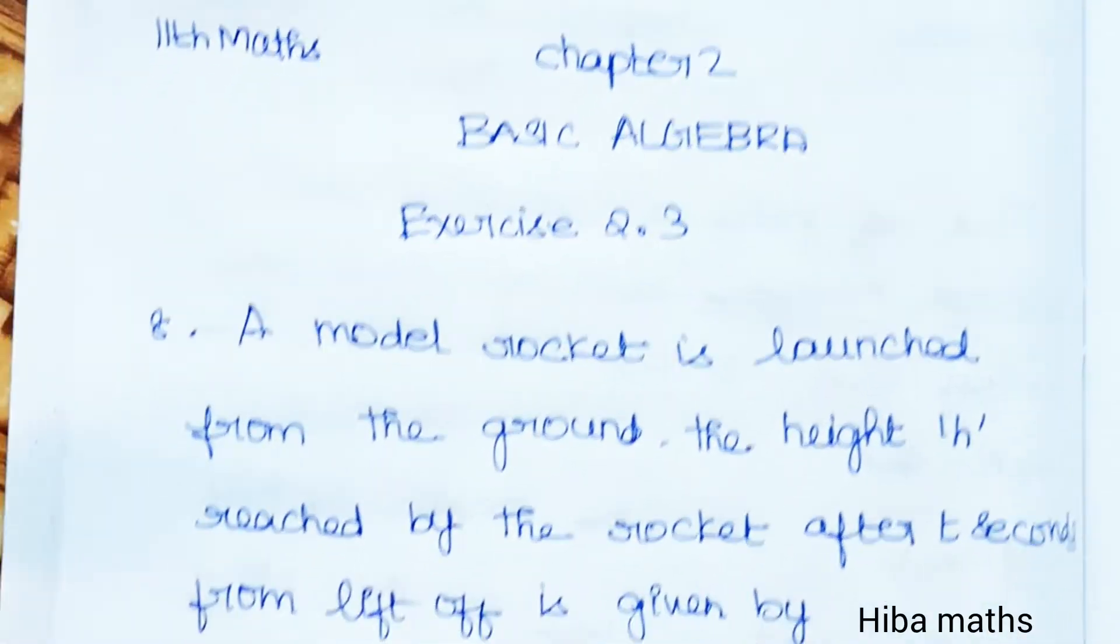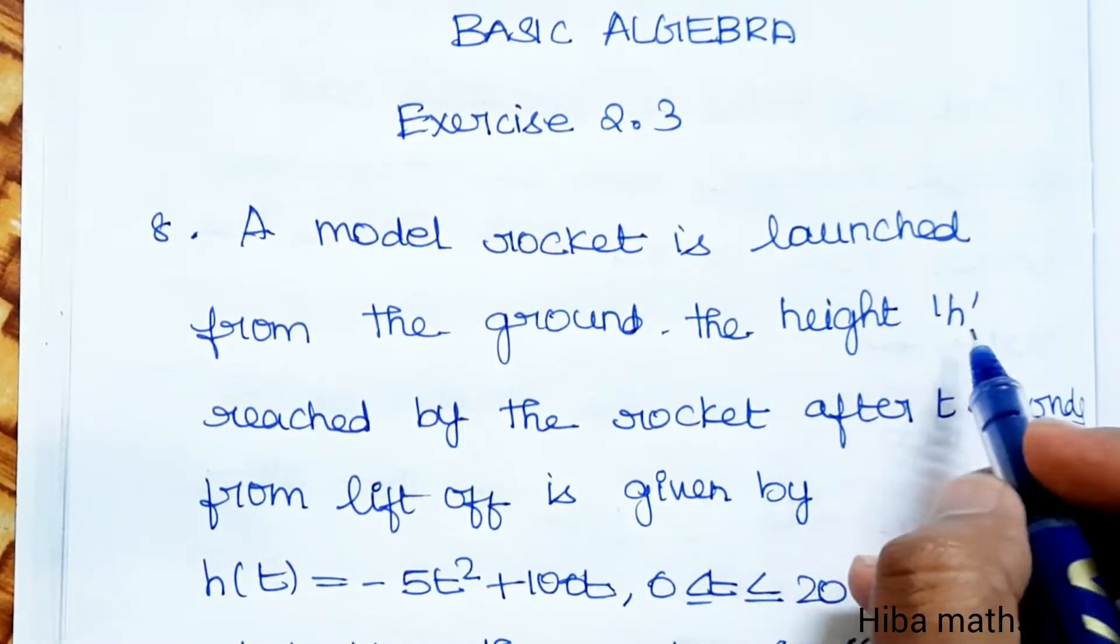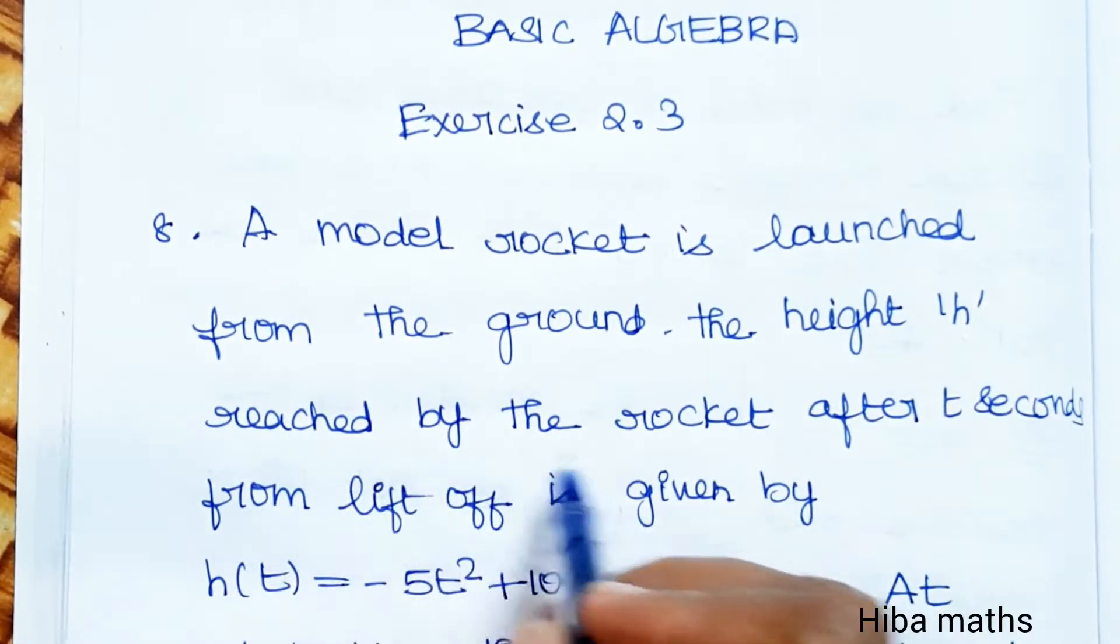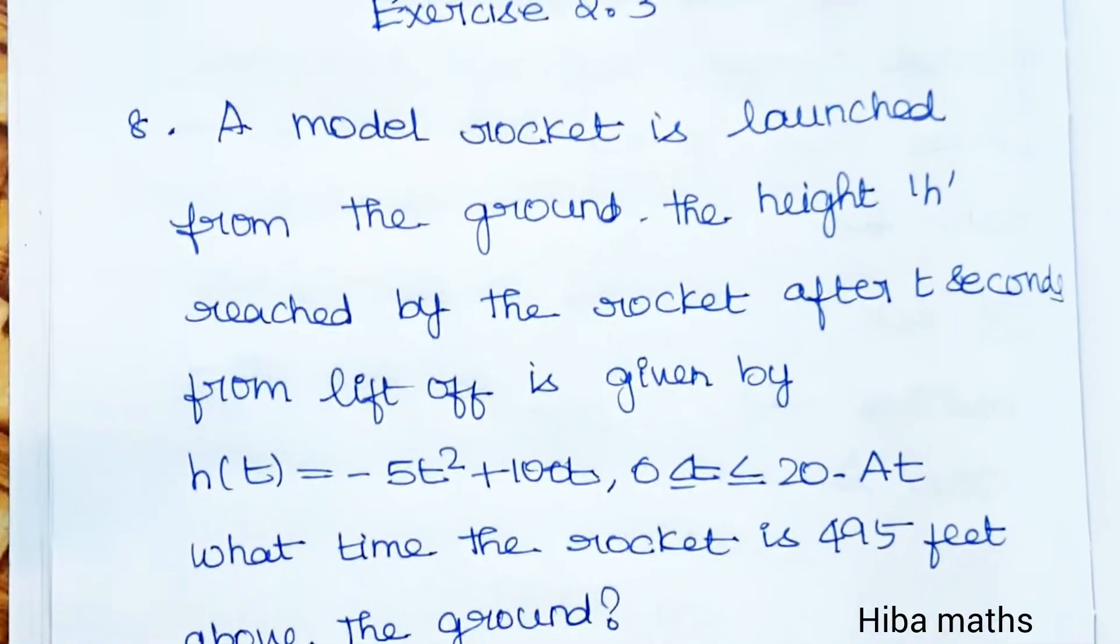Exercise 2.3, question 8. A model rocket is launched from the ground. The height h reached by the rocket after t seconds from lift off is given by one function.